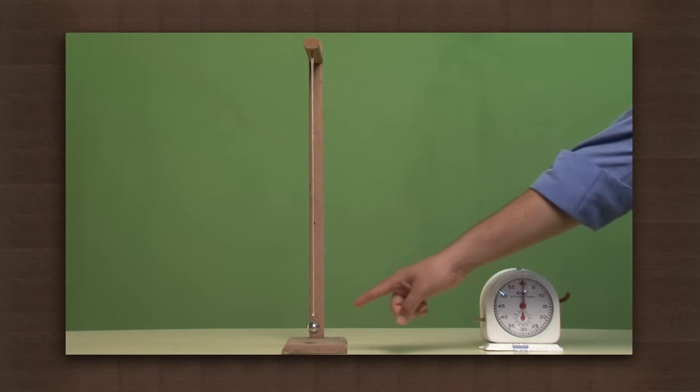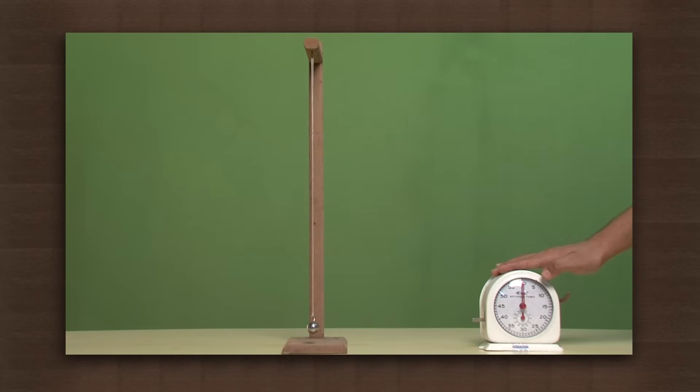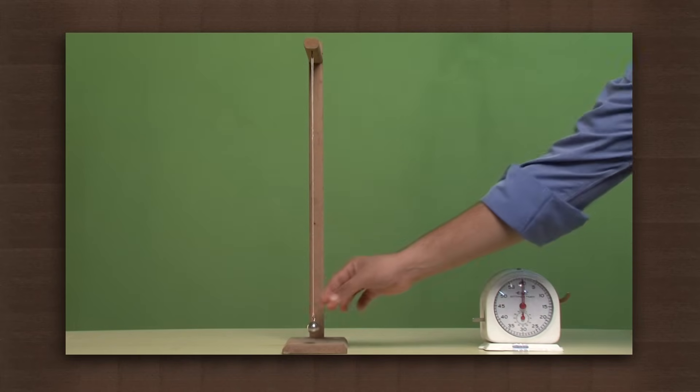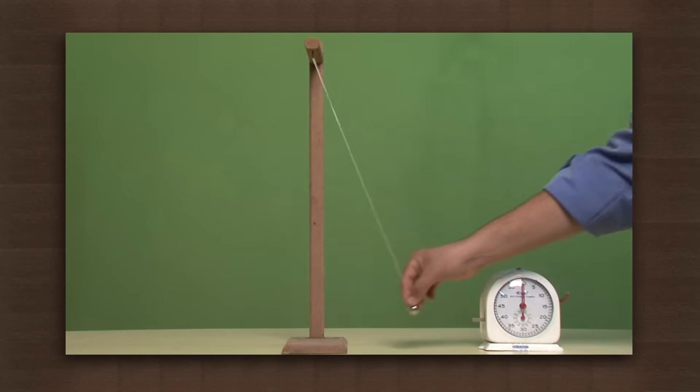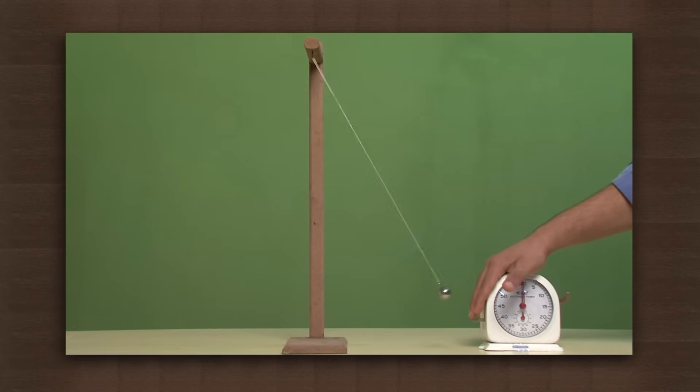Here we have a pendulum and a stop clock. Now we will count the time it takes to complete 10 oscillations. Swing the bob to one side and leave it.